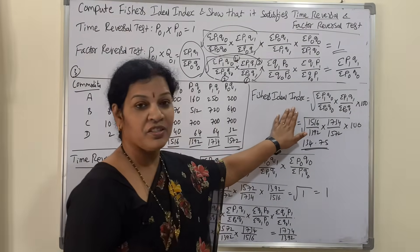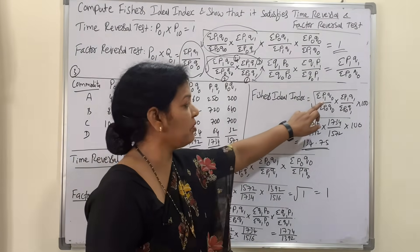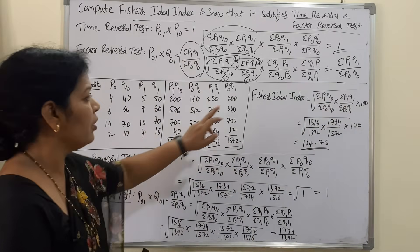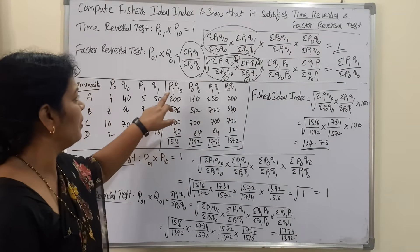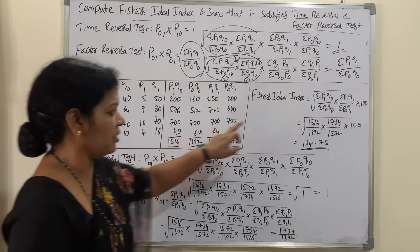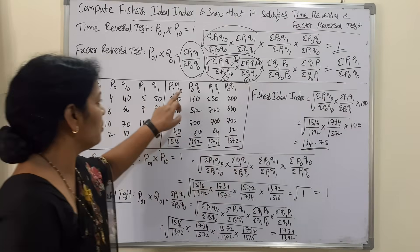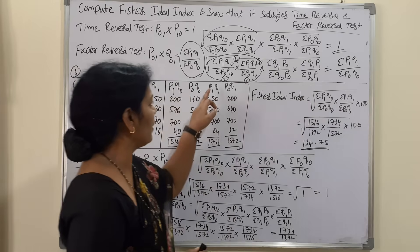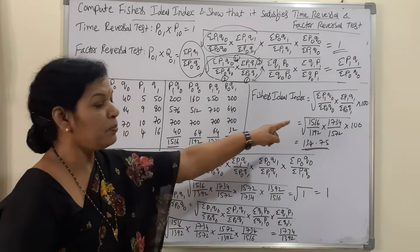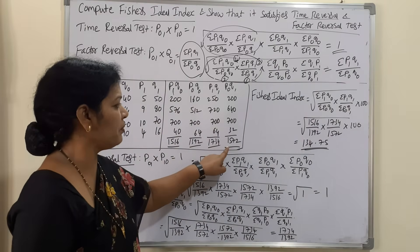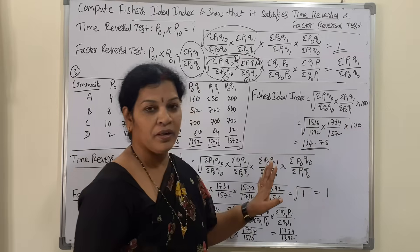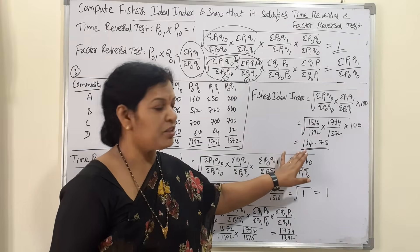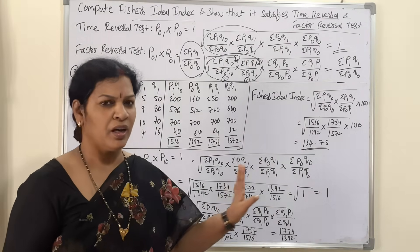Fischer's ideal index number formula is: √[(ΣP1Q0 / ΣP0Q0) × (ΣP1Q1 / ΣP0Q1)] × 100. Substituting: ΣP1Q0 = 1516, ΣP0Q0 = 1392 (note: shown as 3092 then corrected), ΣP1Q1 = 1734, ΣP0Q1 = 1572, multiplied by 100. Simplifying this gives Fischer's ideal index = 134.75.